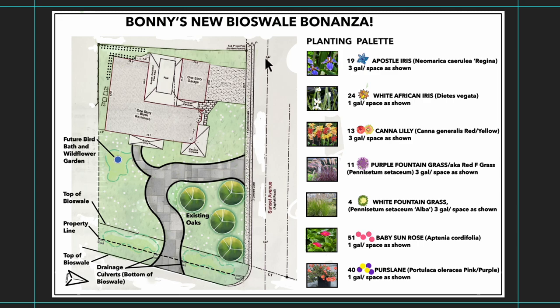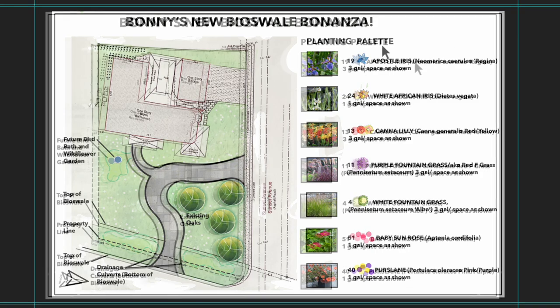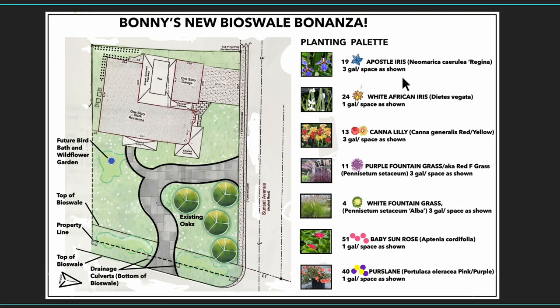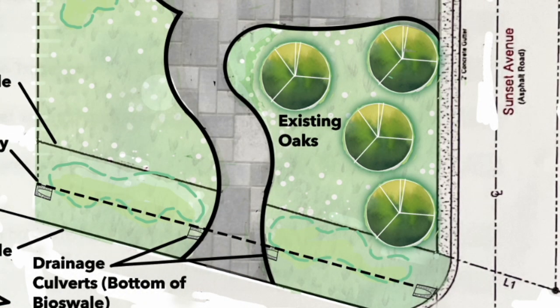Now let's talk about the planting palette. I'll zoom in on the drawing shortly so you can see everything up close as I lay out the design. I recommended some natives and non-natives, but these are the plants the owner — my sister Bonnie — selected. We have the Apostle Iris, White African Iris, Canna Lilies, Purple Fountain Grass, White Fountain Grass, Baby Sunrose, and Purslane. Now let's zoom in on the bioswale area and I'll show you how I laid out each of the plants in her two bioswales.